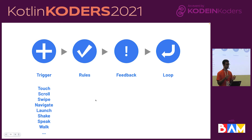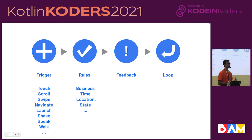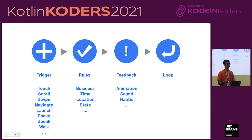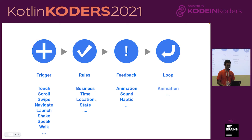Dan's theory is that an animation is composed of four different things: a trigger, some rules, a feedback, and sometimes loops. A trigger can be a touch, scroll, swipe, navigation, or exotic things like shakes, speaking, walking. Rules are the business rules — when should this animation be running, depending on your business, time, location, or state. The feedback is the graphics itself — how things move, transform, or morph. It can also be sound or haptic.